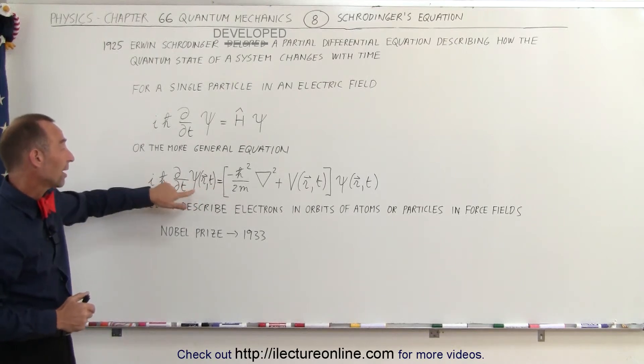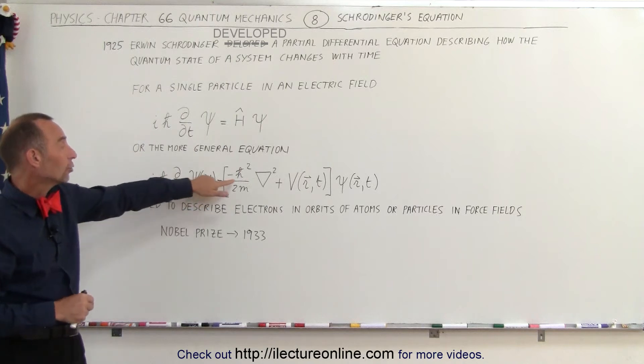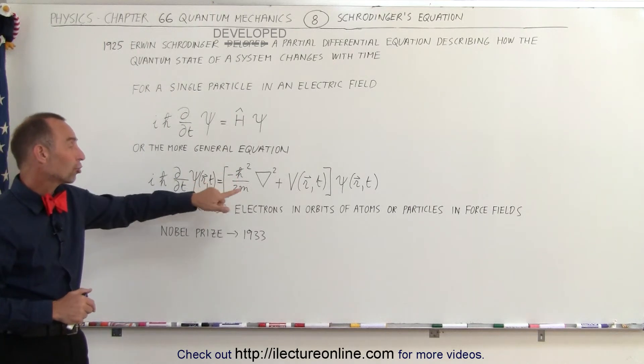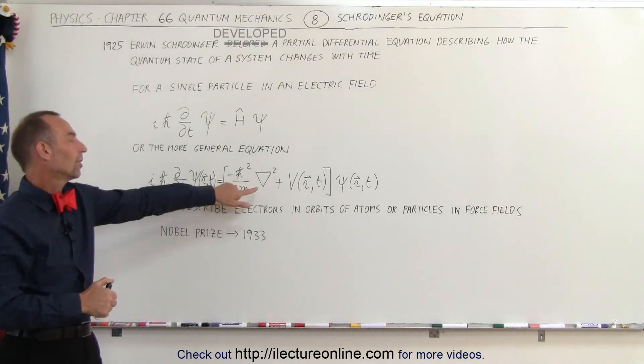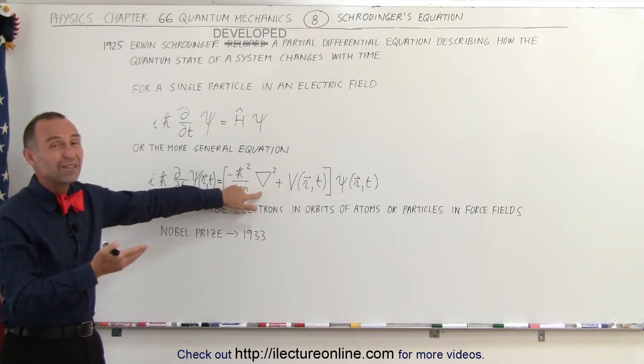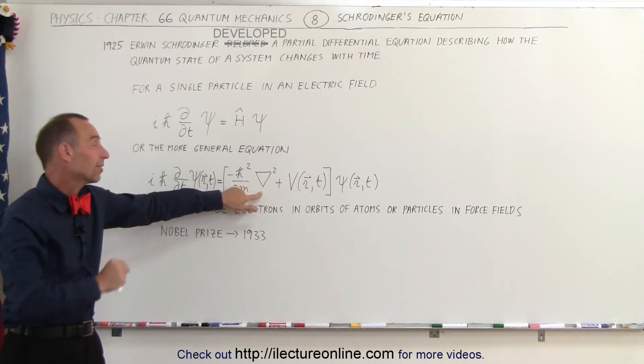Again, so the partial derivative with respect to time of the function that describes the particle is equal to the negative of h-bar squared divided by twice the mass of the particle. So this is the gradient squared, which means it's the second partial derivative with respect to x, y, and z,